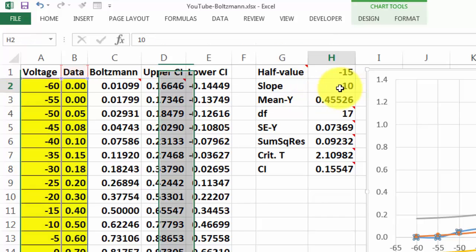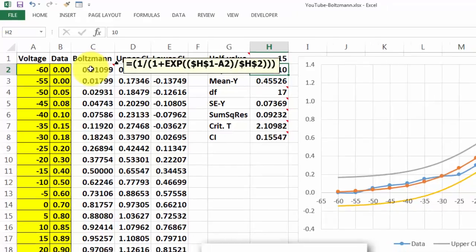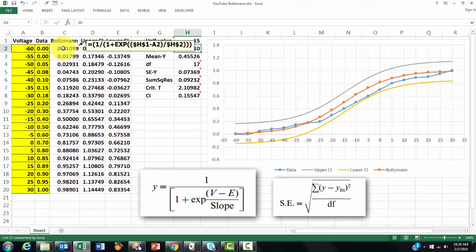The slope is an educated guess. How much does it go up for each new value? And then we are going to implement the formula for Boltzmann. I put it right there. It uses the halfway value and the slope. It uses the exponent function.